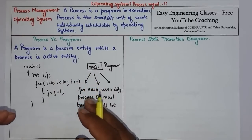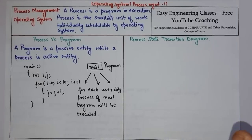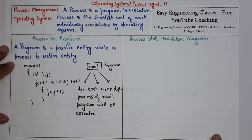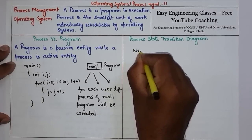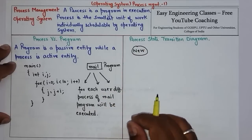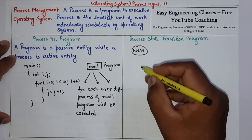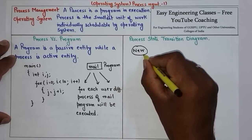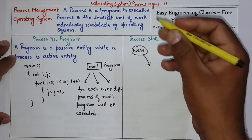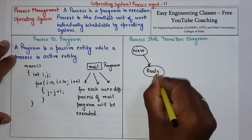Now let's see the process state transition diagram — how a process is created and what are the different states a process goes through before getting terminated. Initially, whenever a new process is created, the process is in the new state. That is the first stage. When the process is created, it needs to be executed by the CPU, so the process is admitted to the queue for execution. The process then goes from the new state to the ready state, meaning it is ready to be executed but waiting for CPU allocation.